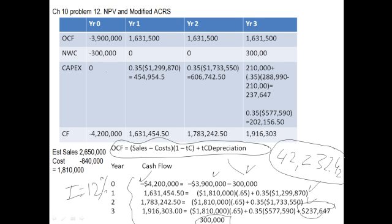Now that we have all of the cash flows, we can find the net present value. Using a financial calculator, cash flow zero is negative $4.2 million, followed by cash flow one, cash flow two, and cash flow three. Using an interest rate of 12%, the net present value result is $42,432.42.